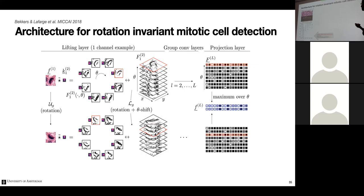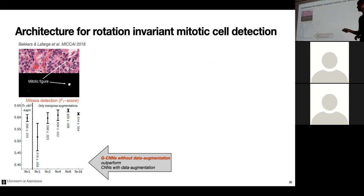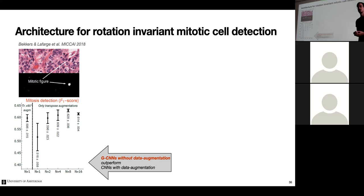Experimental comparison between group CNNs and data augmentation shows: on the horizontal axis, different discretizations of the rotation group are shown — NS1 means no rotation (standard 2D convolutions), NS2 means 180-degree rotation, NS4 means 90-degree rotations, NS8 is 16 rotations. These are all group convolutional networks. A 2D CNN with data augmentation is also shown. Data augmentation helps, but guaranteeing invariance via group convolutions boosts performance further.